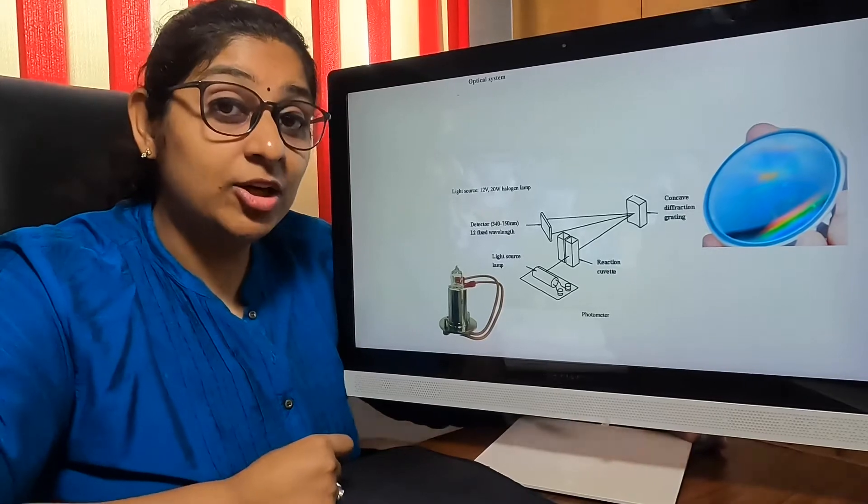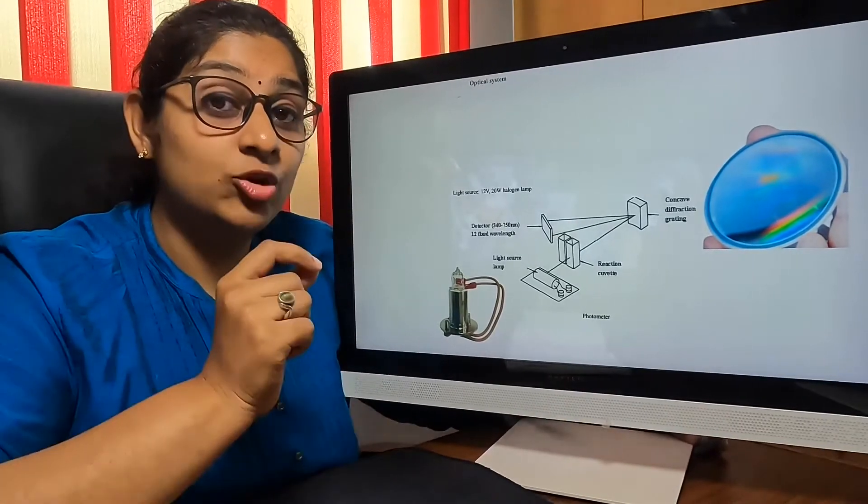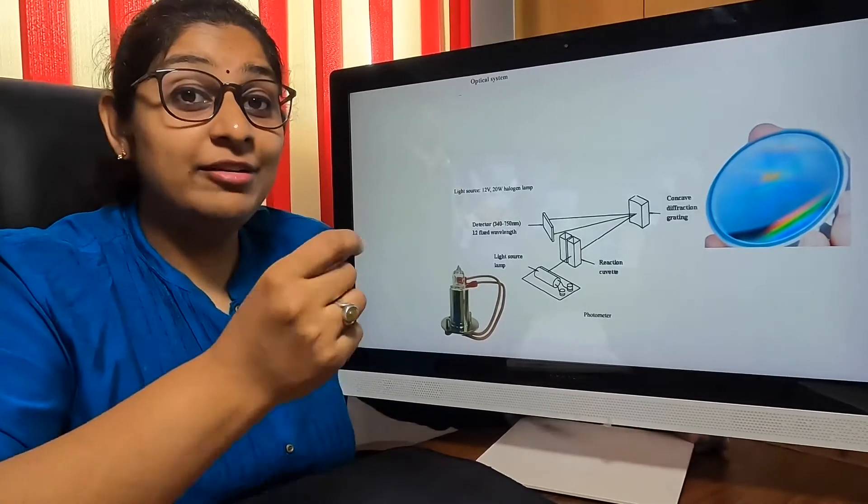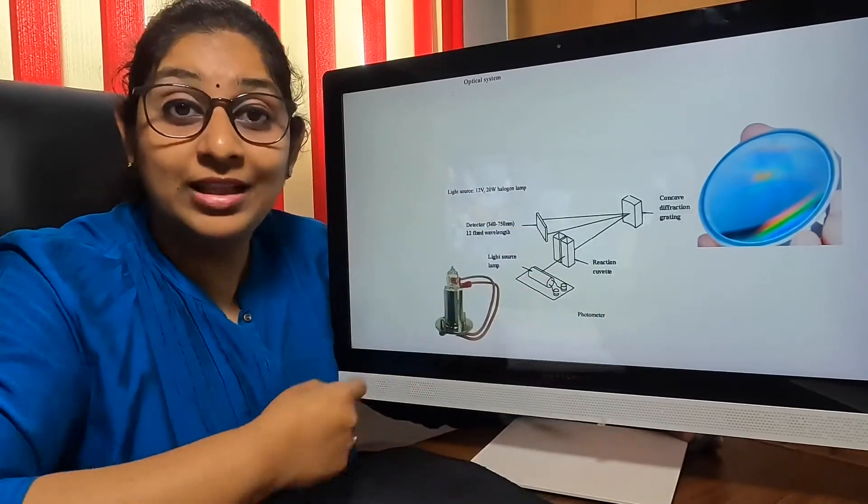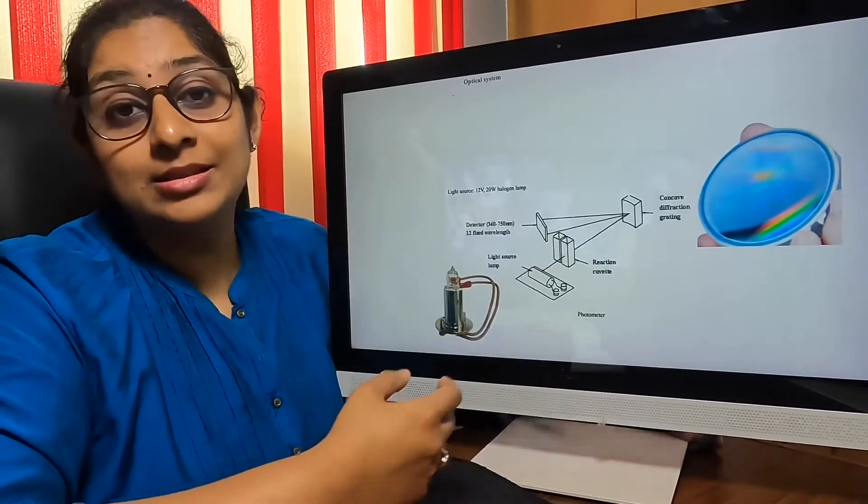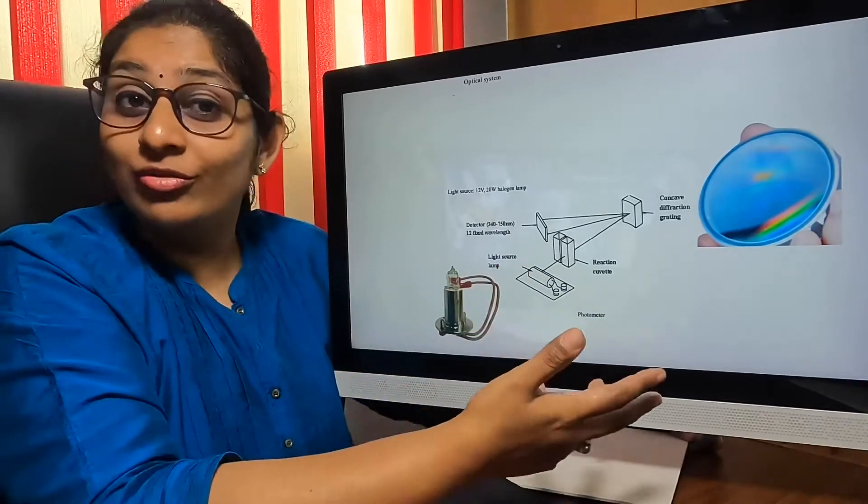This Durabi system has particularly 12 detectors at 12 various wavelengths. The wavelength starts from 340 nanometers and up to 750, there are 12 detectors. It goes like 340, 380, 405, 450.